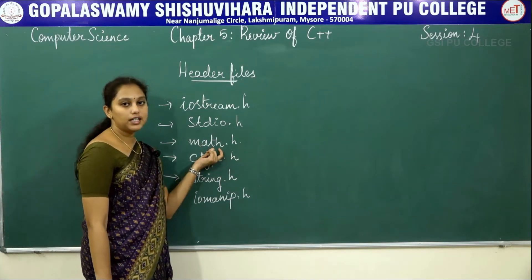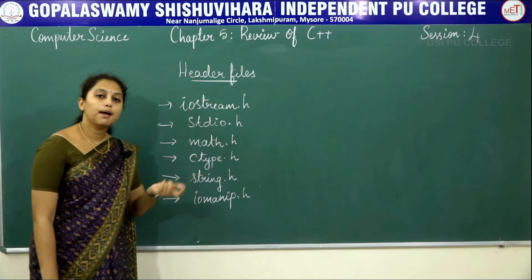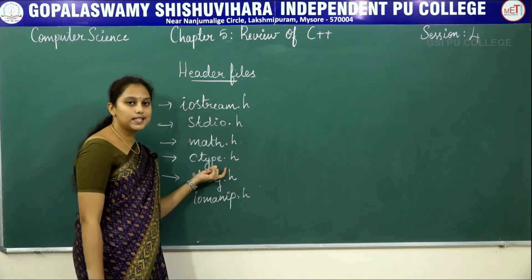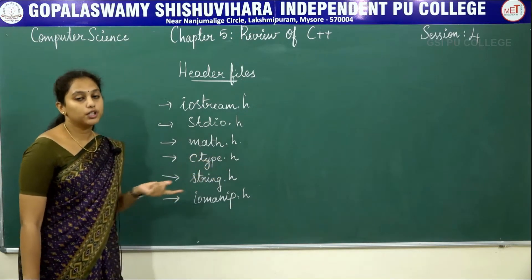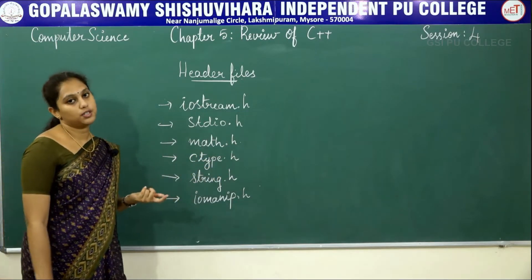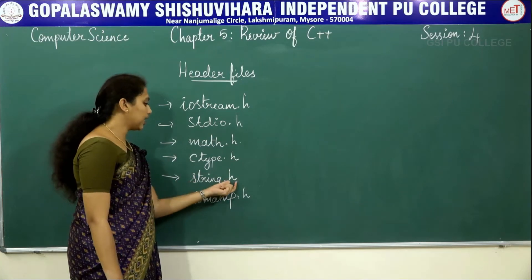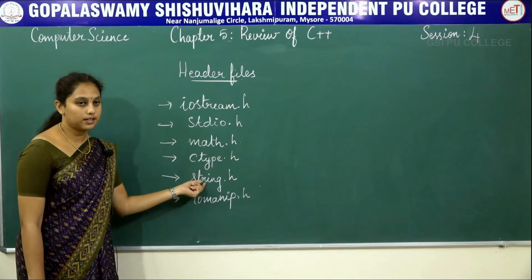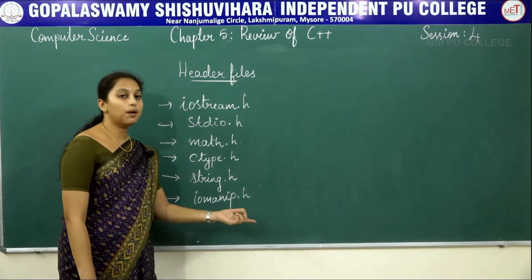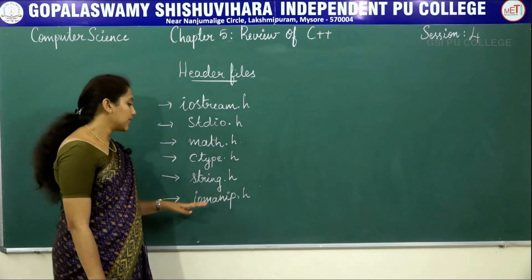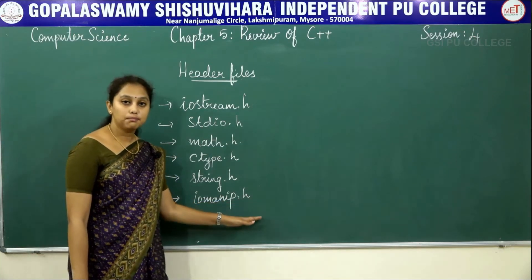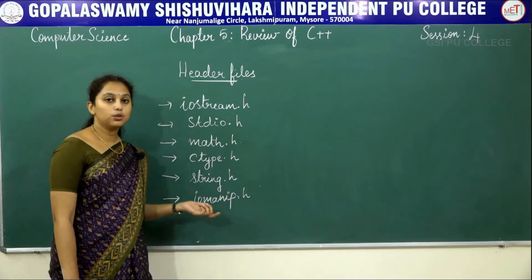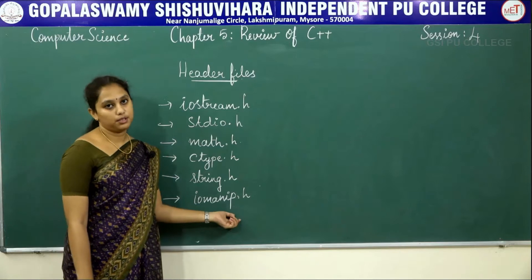math.h — this header file is used when we are using mathematical functions in our program. ctype.h — this header file is used when we are using any character functions. string.h is used when we are using string functions. And iomanip.h contains functions and macros for input-output manipulations.